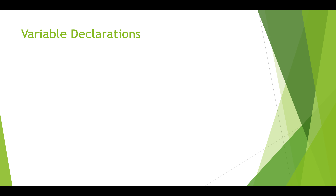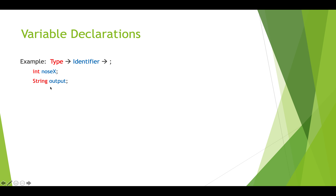How do we create these boxes when programming in Processing? There are two different ways. The first way is to create an empty box — you type the data type and then whatever name you want to give it. For example, 'int noseX' says: give us a box in memory that can hold integers and call it 'noseX', but don't put anything in it yet. Similarly, 'string output' creates a box to hold strings called 'output', with nothing in it yet.